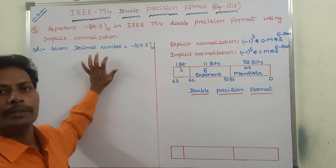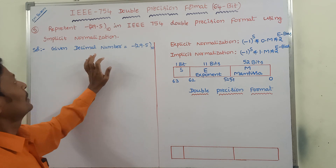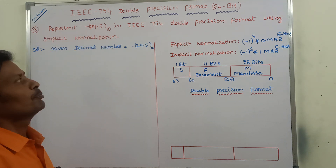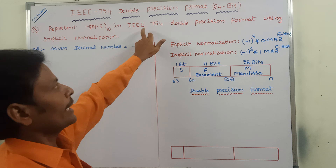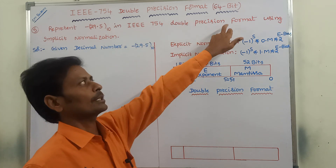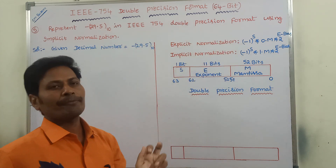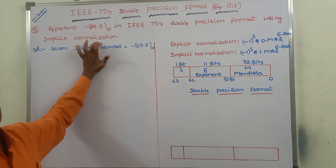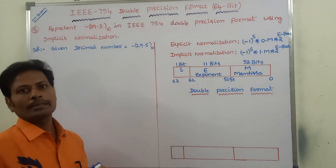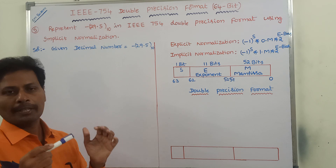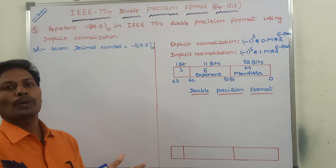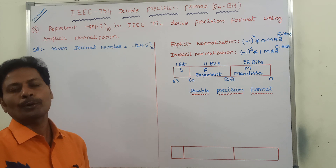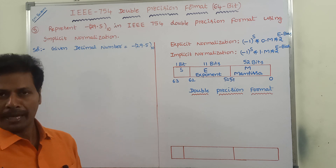Now we have to solve this problem: represent minus 29.5 base 10 in IEEE 754 double precision format using implicit normalization. Before solving this problem, first of all, we have to know about IEEE 754 double precision format.